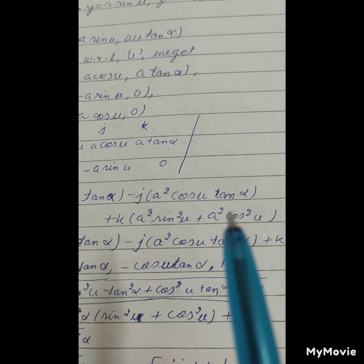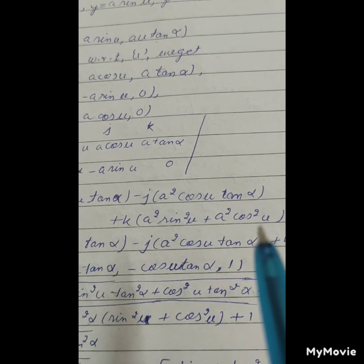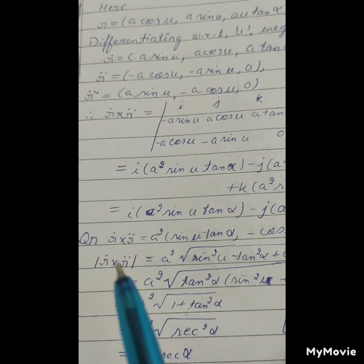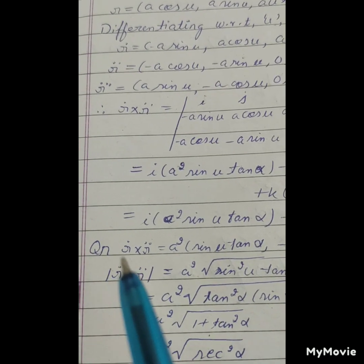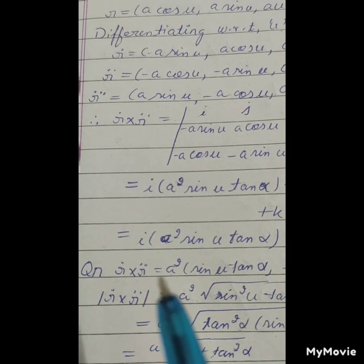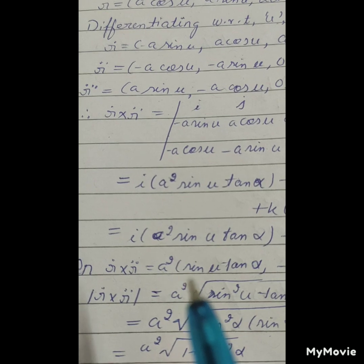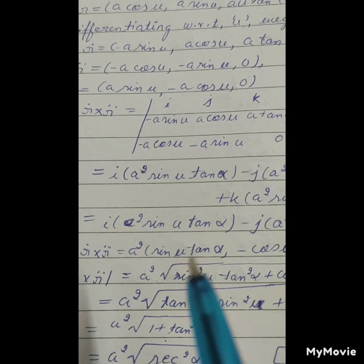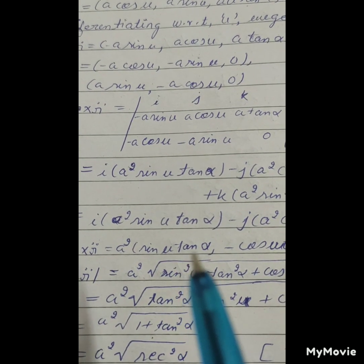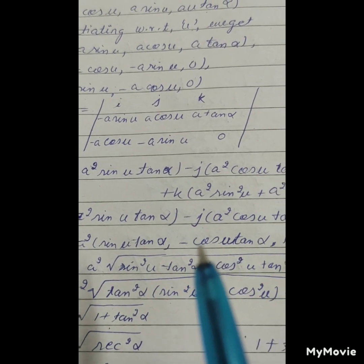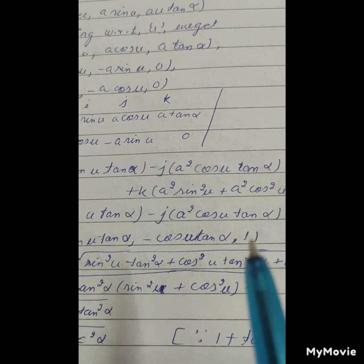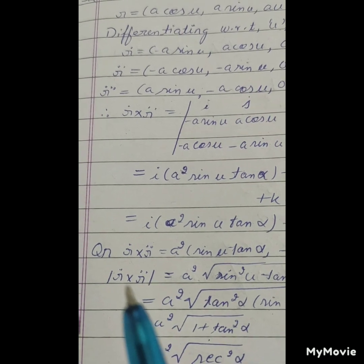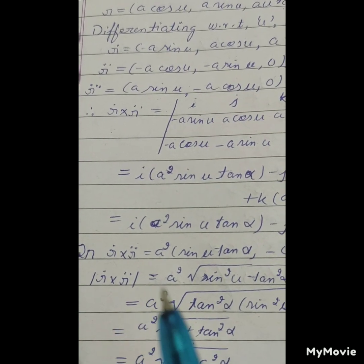Since sin²(u) + cos²(u) = 1, the k-component simplifies to a². Therefore ṙ × r̈ = (a²·sin(u)·tan(α), −a²·cos(u)·tan(α), a²).